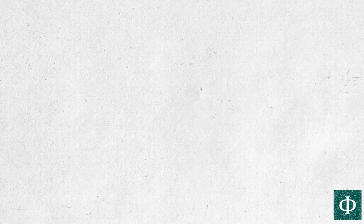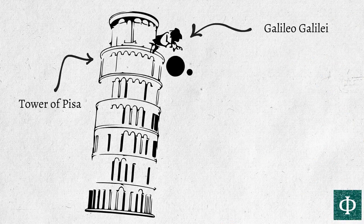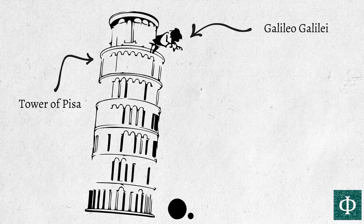This was proven for the first time by a physicist called Galileo Galilei, and what Galileo did is that he let two spheres fall freely from the leaning tower of Pisa, and what he found out was that the two spheres touched the ground at the exact same time.